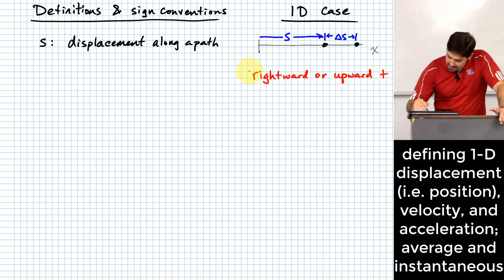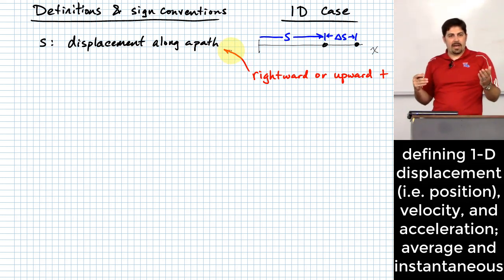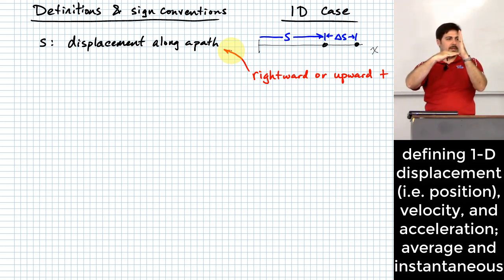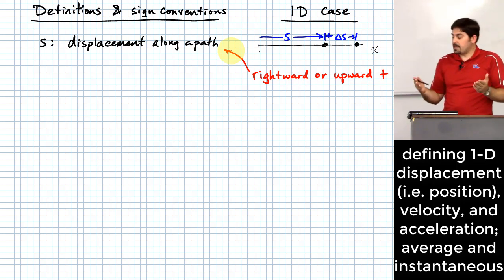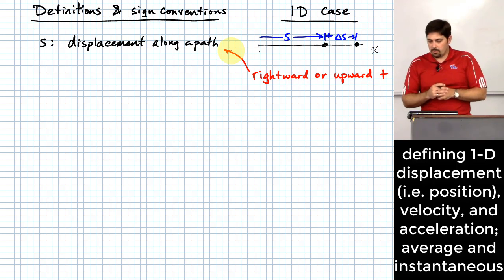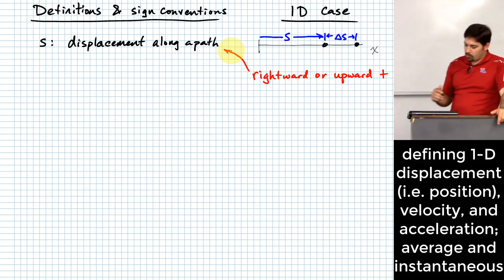Whether something is rightward or upward is kind of a matter of perspective. If you think about an x-y axis, something that moves to the right for me looks like it's going left for you. So it's not something super absolute, but it can have some meaning with respect to how you've drawn it on the page. We'll use rightward or upward as positive as our standard sign convention.